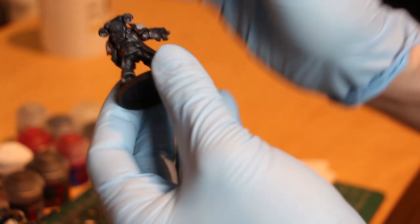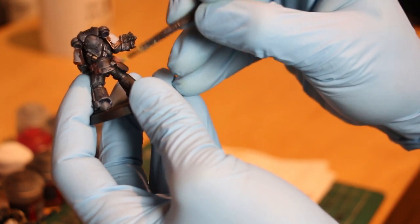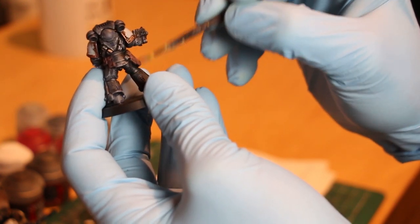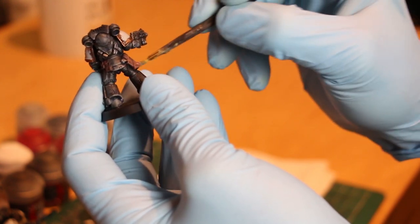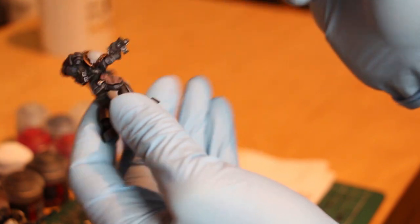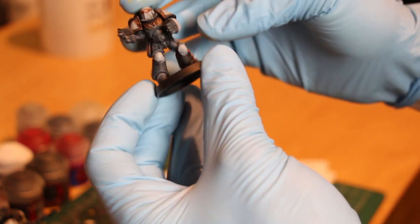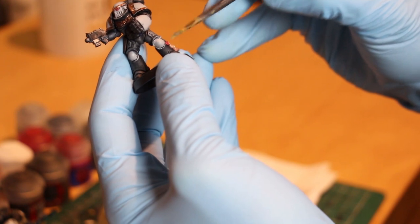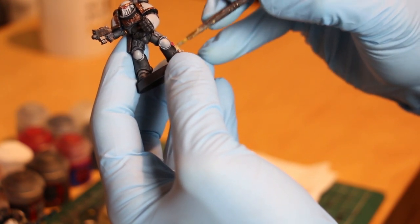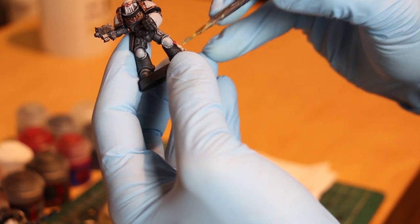Now I want to highlight the leather so I use Bugman's Glow for this. And don't worry if you go over a little bit like I did here, we're still going to darken down the material. So I'm just going to use a very small amount of it to really bring out that leather. I'm also going to use it on the purity seal before I go into a more beige tone, Ushabti Bone. As you can see here I've already applied the Bugman's, let it dry, and now I'm just applying a very fine amount of Ushabti Bone to bring out the beige.